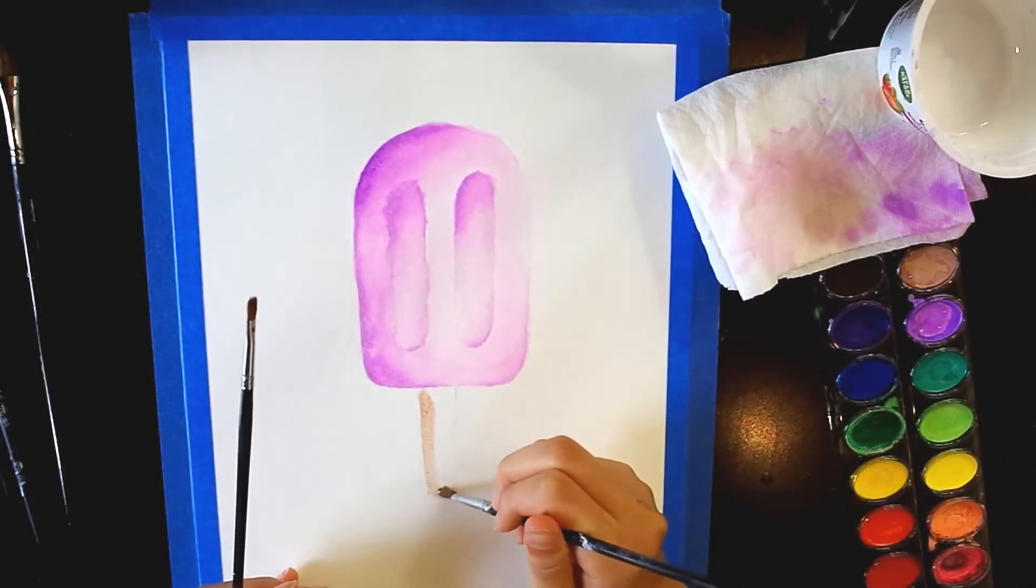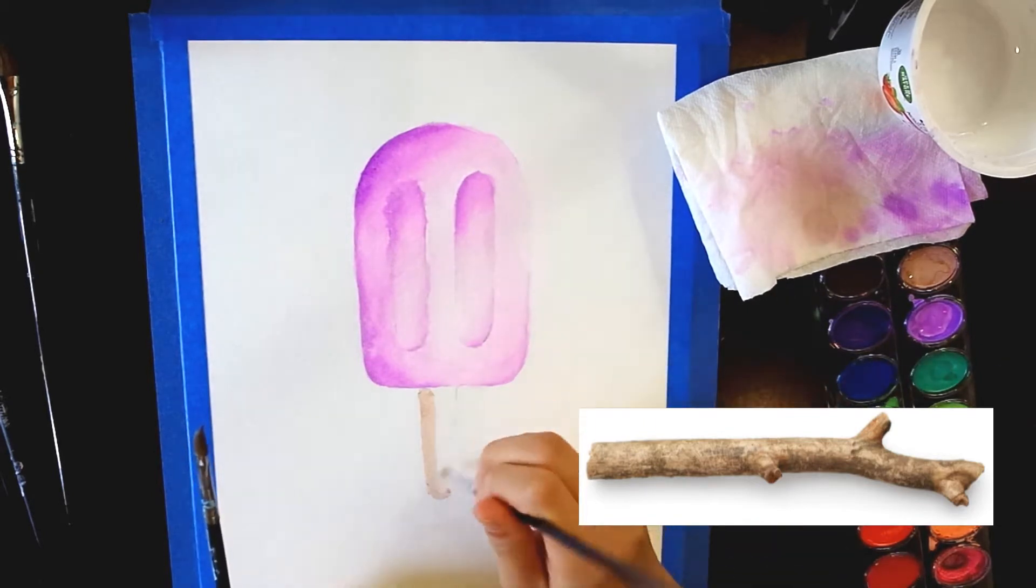Now use a tan color to paint the stick, no not the stick from a tree, a popsicle stick.